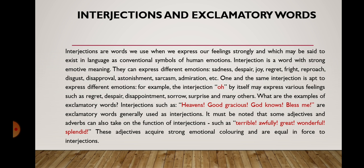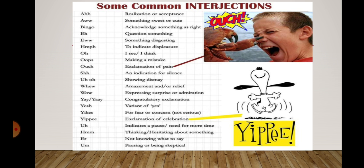These adjectives acquire strong emotional coloring and are equal in force to interjections. A greater or lesser volume of emotiveness may be distinguished in words which have emotive meaning in their semantic structure. The most highly emotive words are charged with emotive meaning to the extent that the logical meaning can hardly be registered — these are interjections and all kinds of exclamations. For example, the interjection 'ah' expresses realization or acceptance; 'bingo' expresses acknowledgement that something is right; 'oops' can be used when we make a mistake.